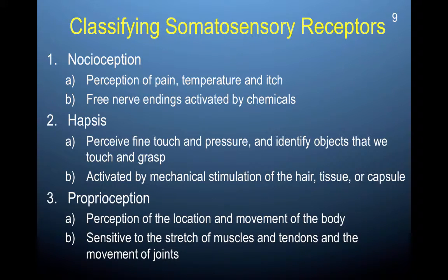There are three overall types of receptors. First, nociception — the perception of pain, temperature, and itch — uses free nerve endings activated by chemicals. Second, hapsis is the perception of fine touch and pressure, identifying objects we touch and grasp, activated by mechanical stimulation of hair, tissue, and capsule. Third, proprioception is perception of the location and movement of the body, sensitive to stretch of muscles and tendons and the movements of joints.